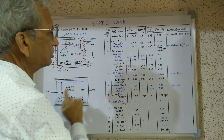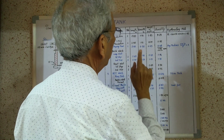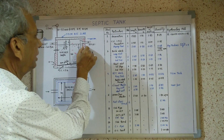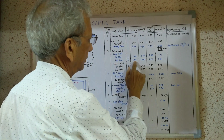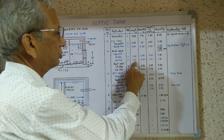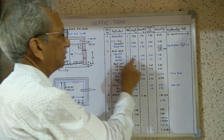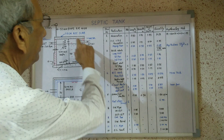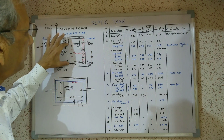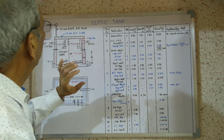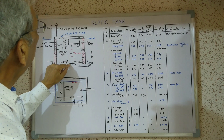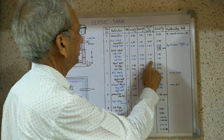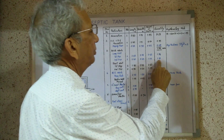Second step — two number long walls. Length including corners: internal size 2 meters plus 20 cm on each side, giving 2.40 meters. Thickness of wall at this level is 20 centimeters. Height: 140 minus 60 equals 80, plus 5 equals 85, plus 30 equals 1.15 meters. The calculation gives 1.10 cubic meters.